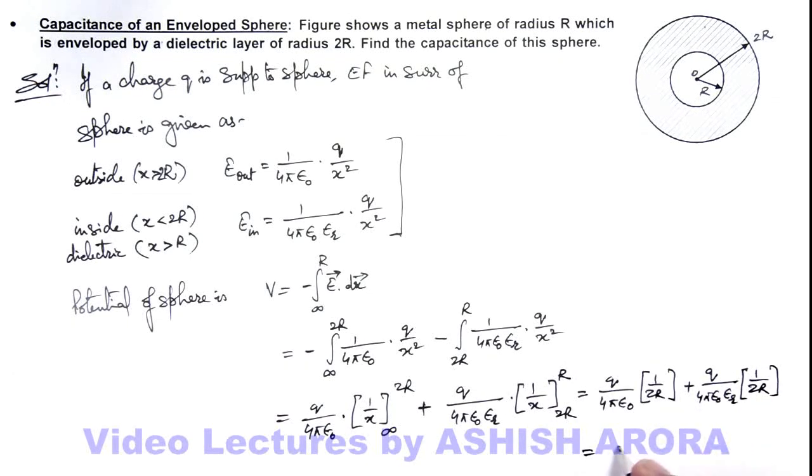So the result we are getting is Q by, this can be written as 8π epsilon not R, multiplied by 1 plus 1 by epsilon R. That will be the answer to this problem, that is the potential of this sphere.